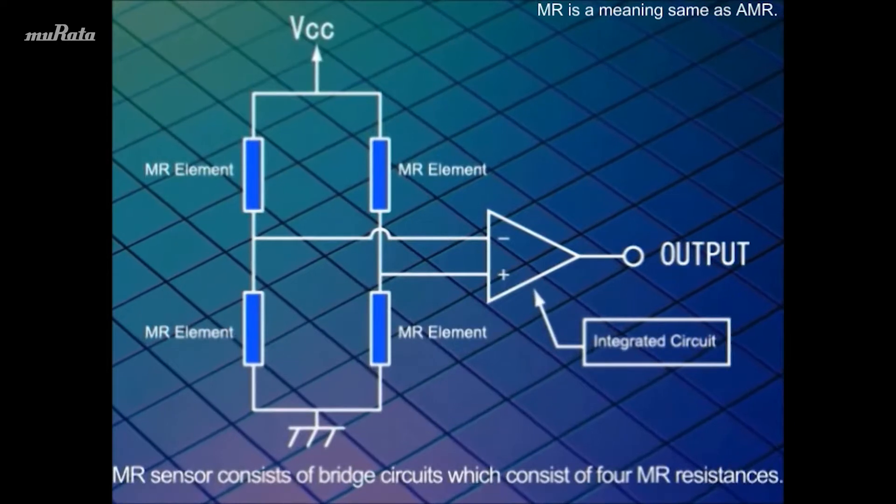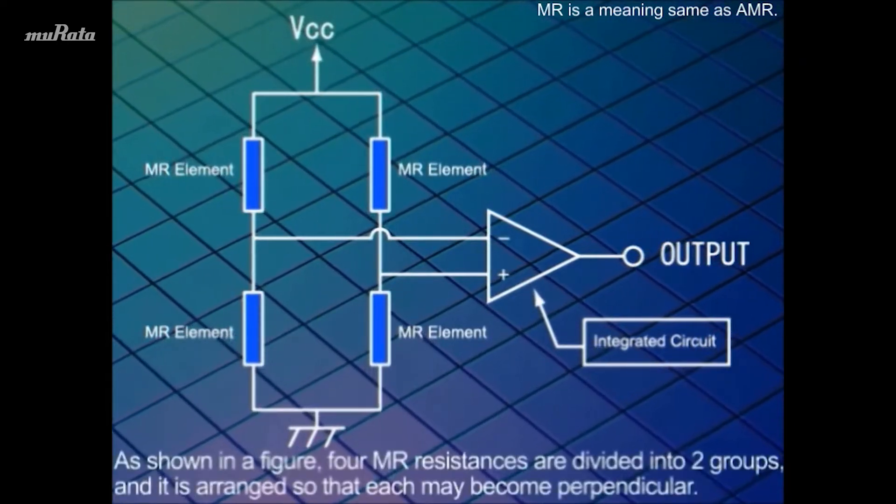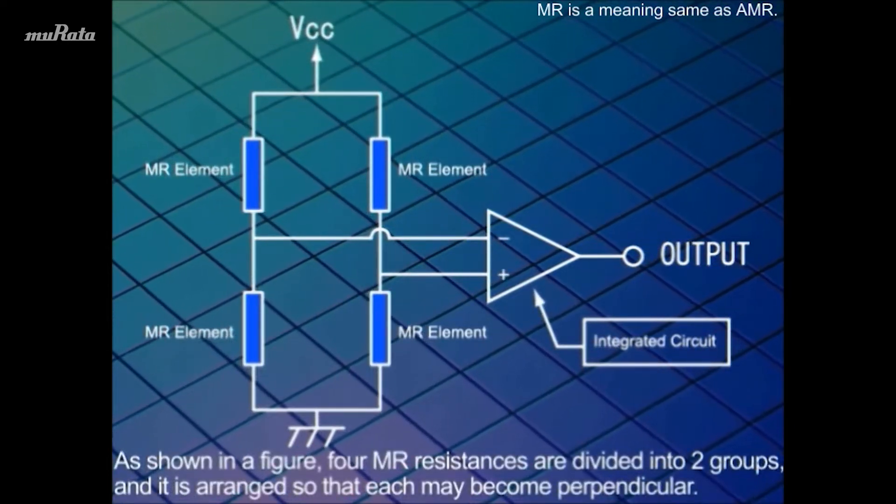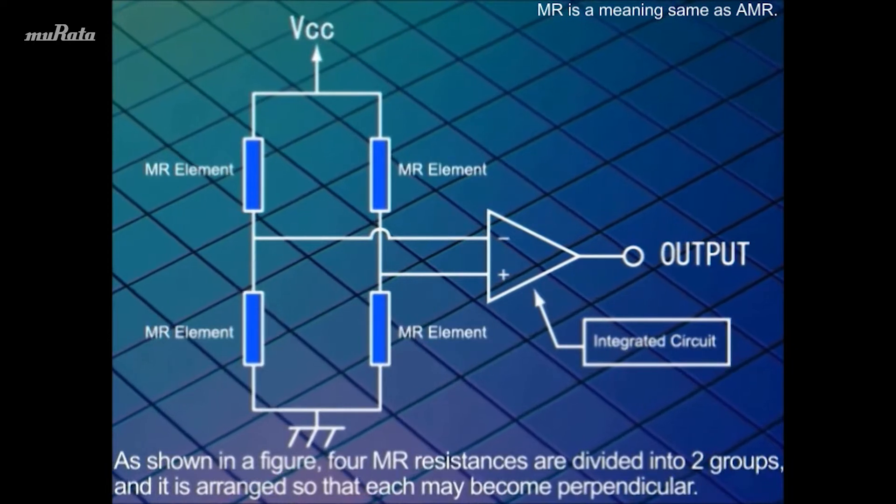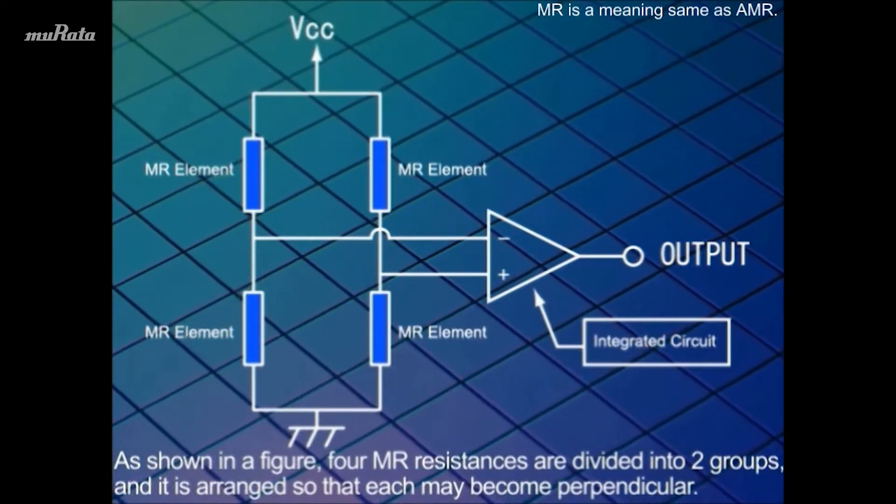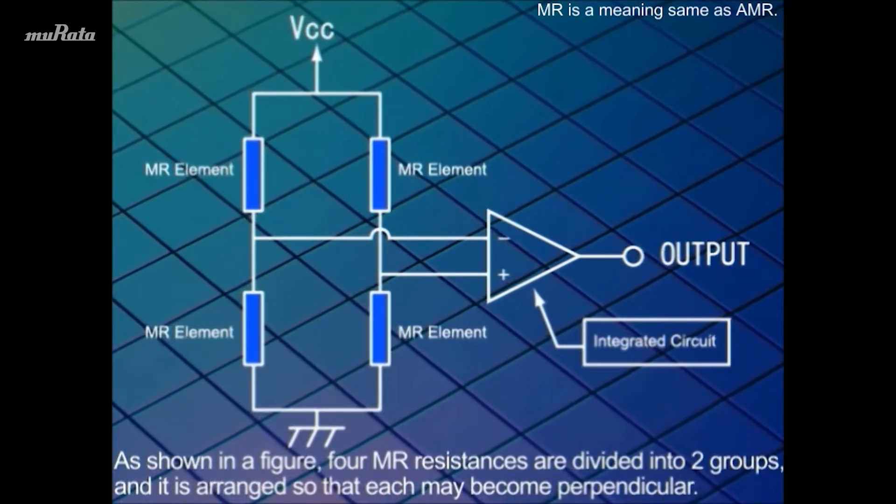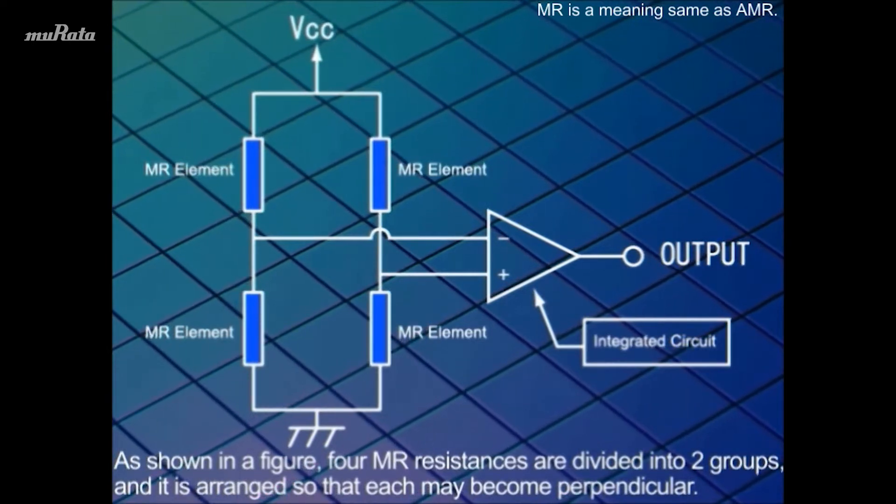MR sensor consists of bridge circuits which consist of four MR resistances. As shown in the figure, four MR resistances are divided into two groups and arranged so that each may become perpendicular.